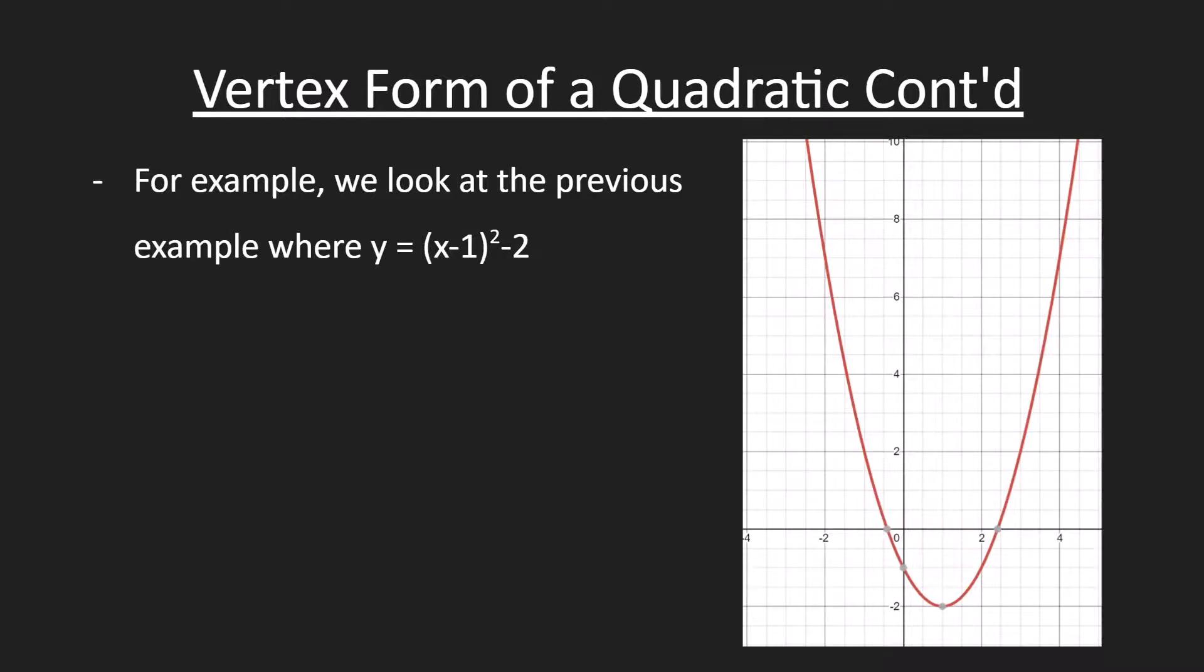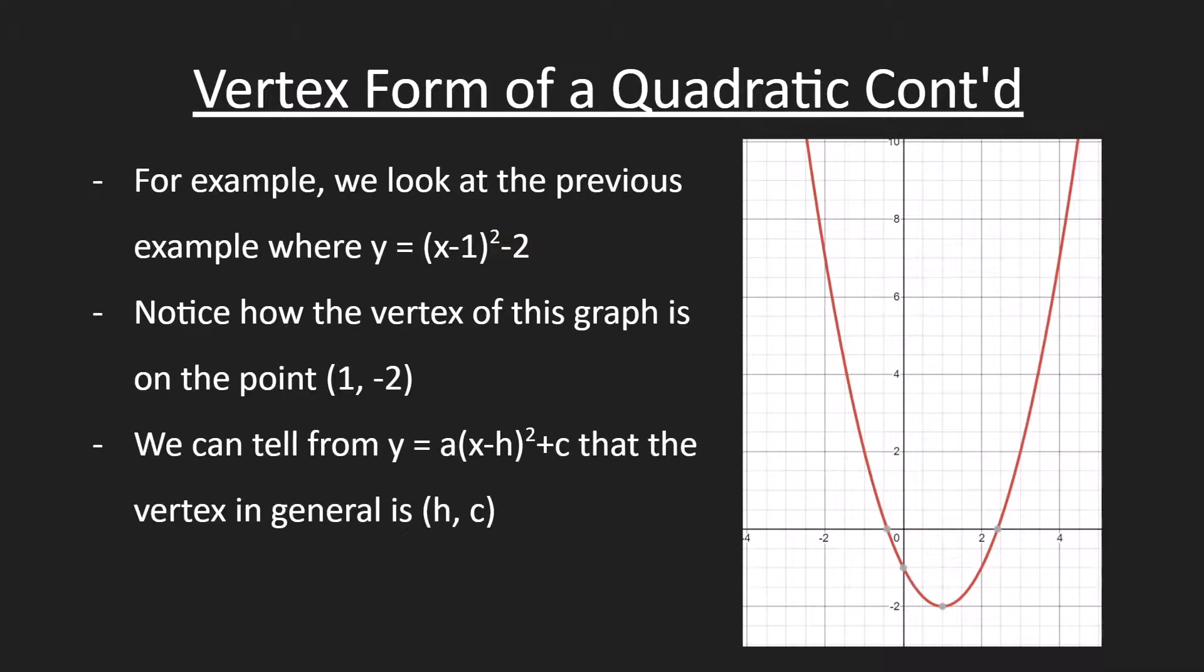For example, we can look at the previous example where y equals x minus 1 squared minus 2. Notice how the vertex of the graph is on the point 1 comma negative 2. We can tell from y equals a times x minus h squared plus c that the vertex in general is h comma c.